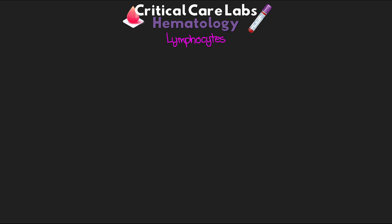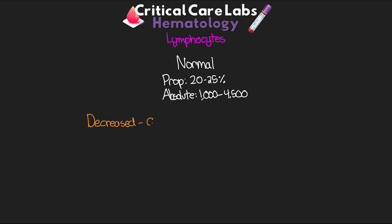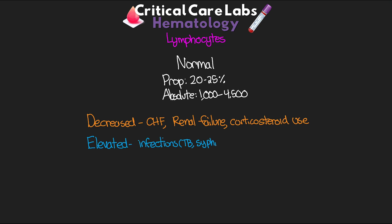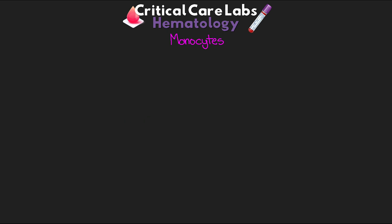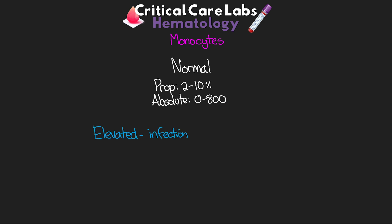Next is our lymphocytes. Normal proportional value is 20 to 25%, with an absolute value of 1,000 to 4,500. We can see decreased lymphocytes with congestive heart failure, renal failure, and corticosteroid use. Elevated lymphocytes are seen with certain infections such as TB, syphilis, and pertussis, autoimmune disease, and ulcerative colitis. The last differential is the monocytes. Normal proportional value is 2 to 10%, with an absolute value of 0 to 800. We can see elevated monocytes in infections like bacterial endocarditis, TB, and autoimmune disease.